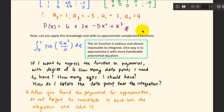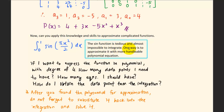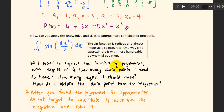You can now apply this knowledge to approximate complicated functions. Consider finding the integration from 0 to 1 of sin(πx²/2). The integration of this sine function, which involves x² and x³ terms, is tedious and almost impossible to integrate directly. One way is to approximate it with a more handleable polynomial equation — say, a polynomial of degree 4. Based on the example we discussed, how many data points do you need, how many equations should you generate, and how do you obtain the data points from this function?